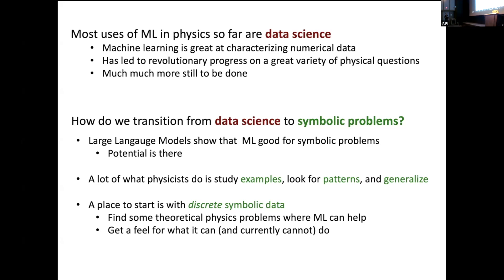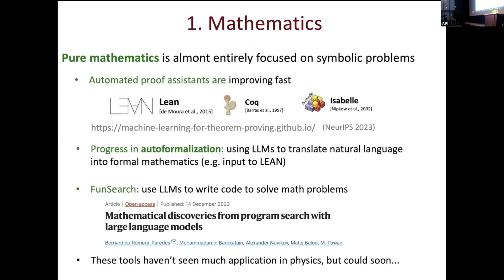What physicists do is take examples, look for patterns, and generalize. A place to start exploring how machine learning can be used for symbolic problems is to look at something where we have symbolic data that's discrete and numerical in a sense — where we have a lot of training data. The idea is to figure out what machines can do in the symbolic arena, and then generalize.